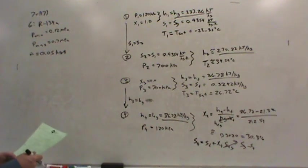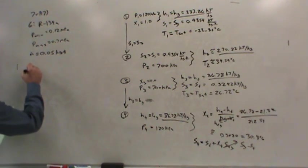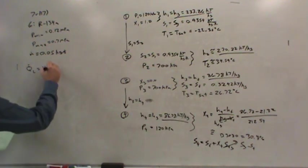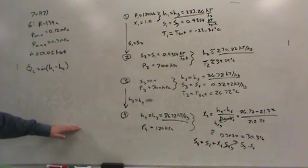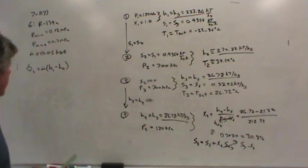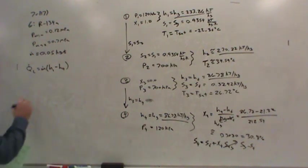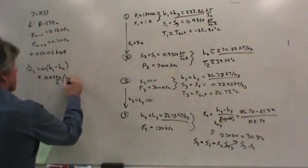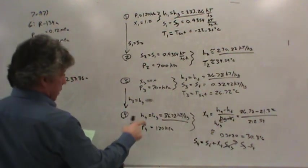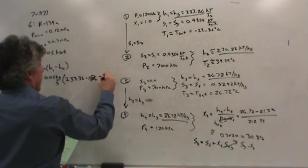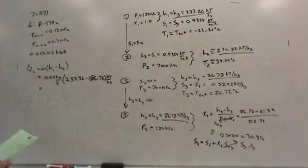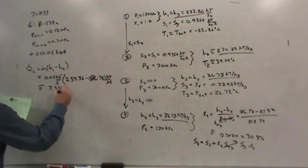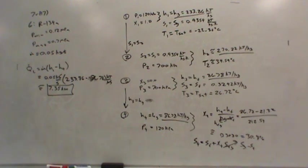Since we've found all the enthalpies, we've pretty much solved the problem. They want to know the heat flow rate from the refrigerated area. That equals the mass flow rate of the refrigerant times the enthalpy change across the evaporator. The evaporator is absorbing thermal energy. The specific heat transfer is H1 minus H4. When we multiply by the mass flow rate, 0.05 kilograms per second, H1 is 233.86, H4 is 86.78, this comes out to about 7.35 kilowatts.